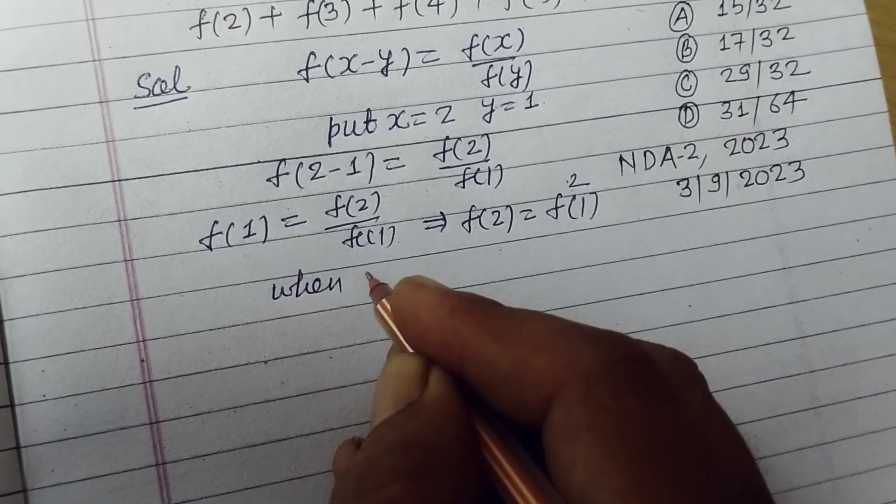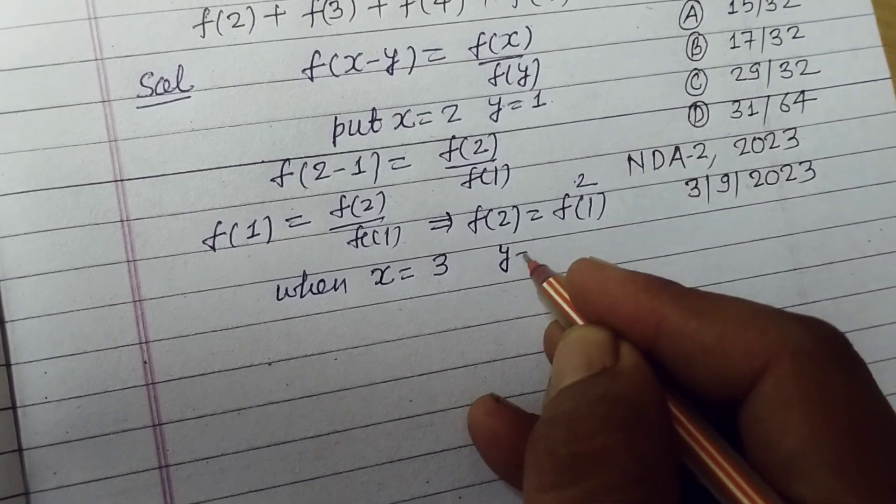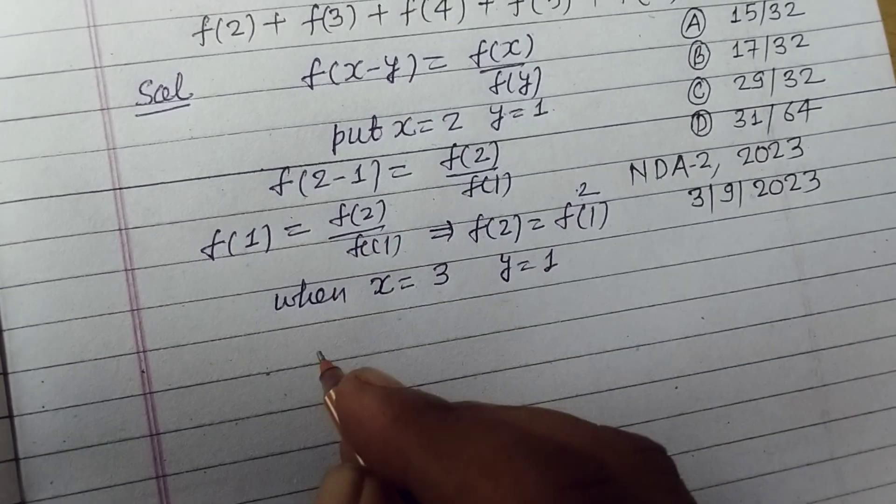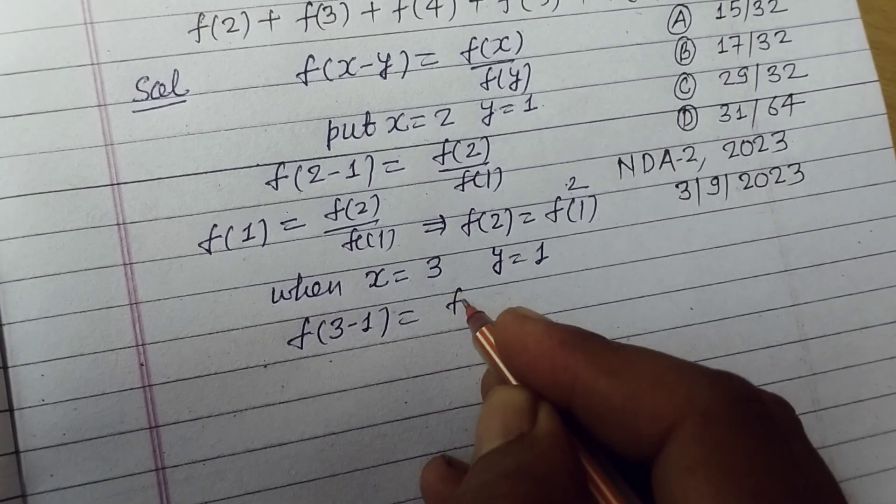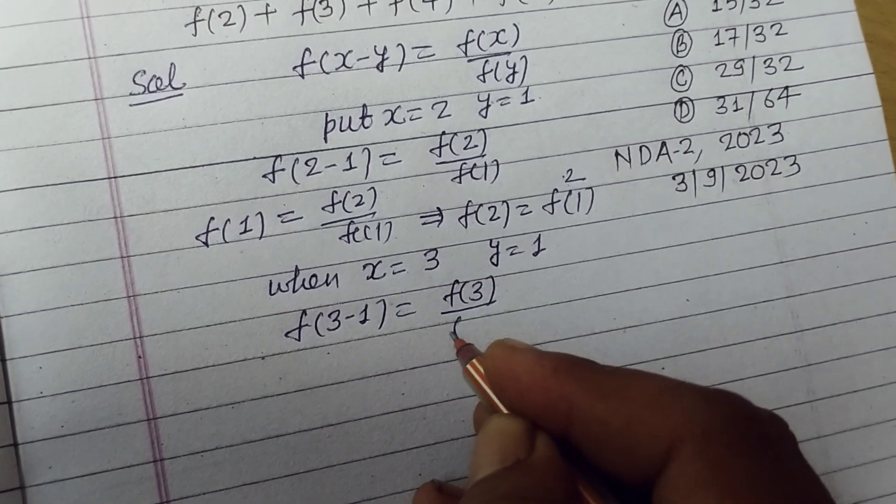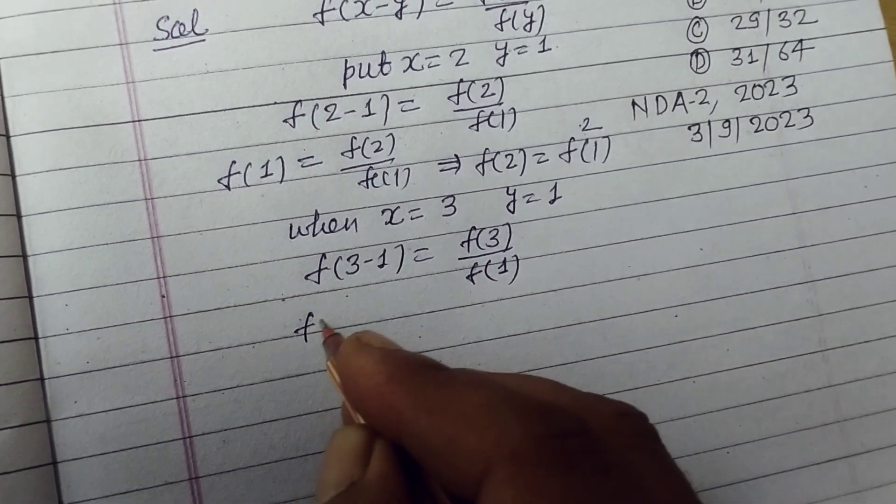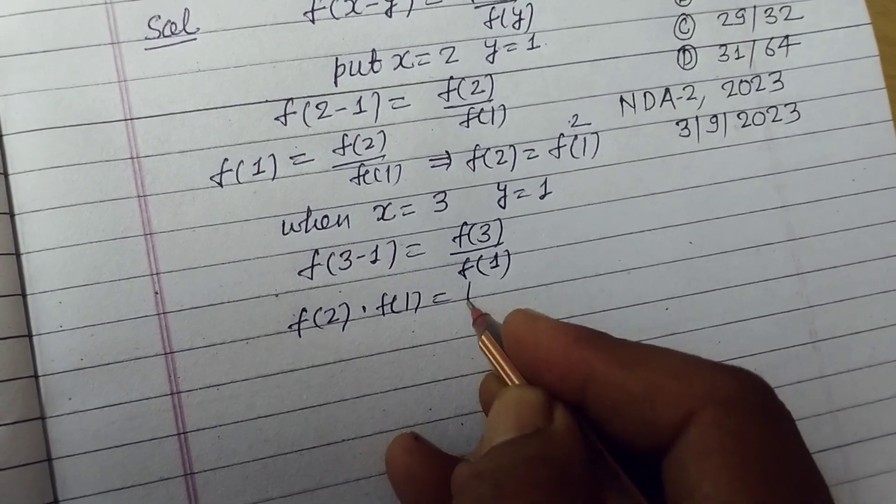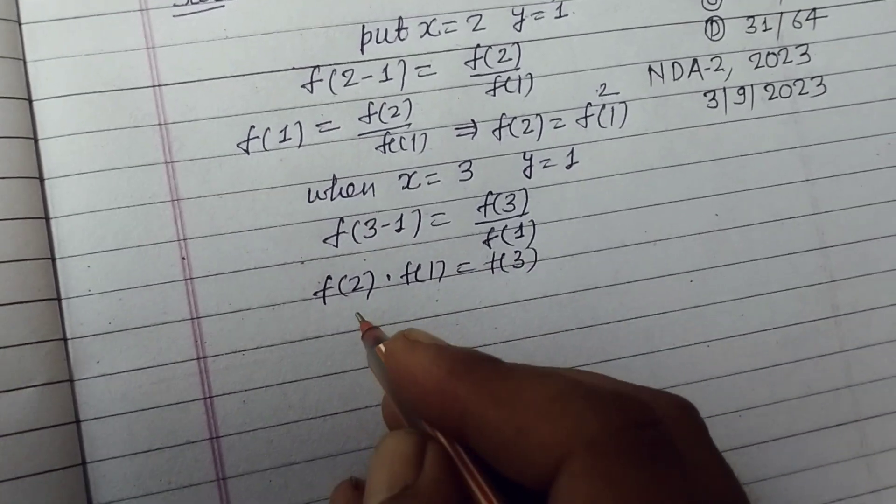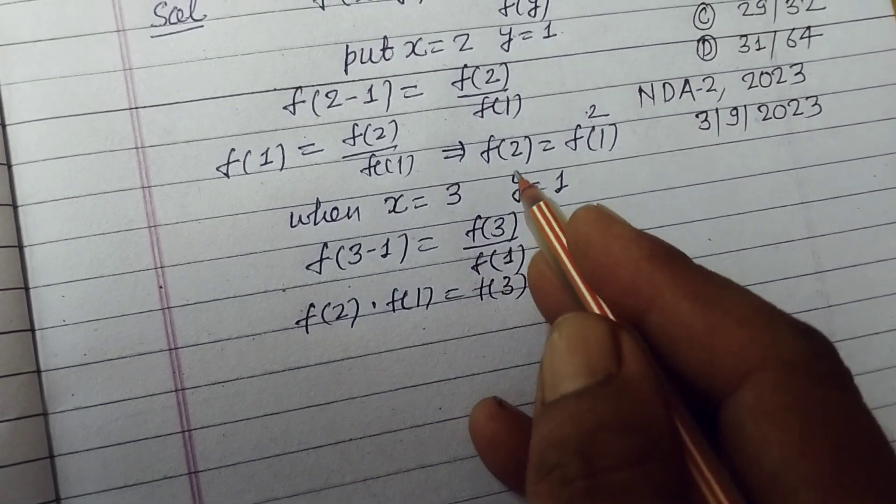And when we put x equal to 3, y equal to 1 in this, we got f(3-1) equal to f(3) over f(1) and this is f(2). f(2) is already obtained.